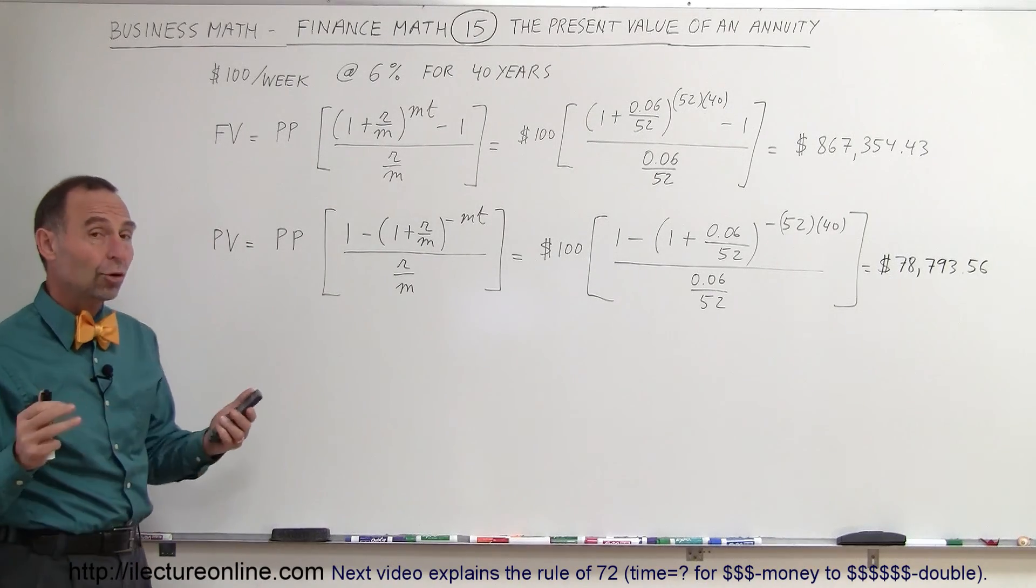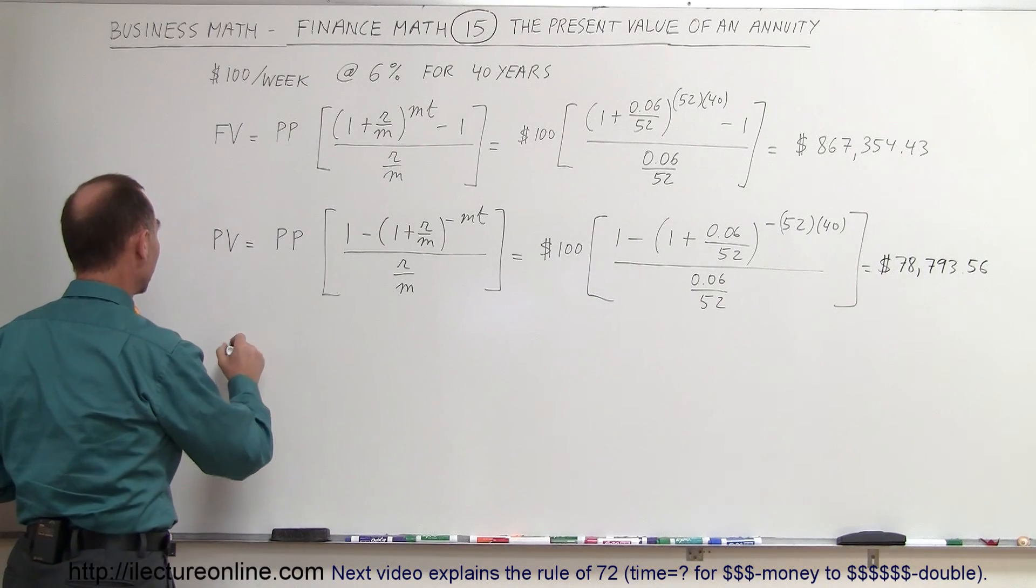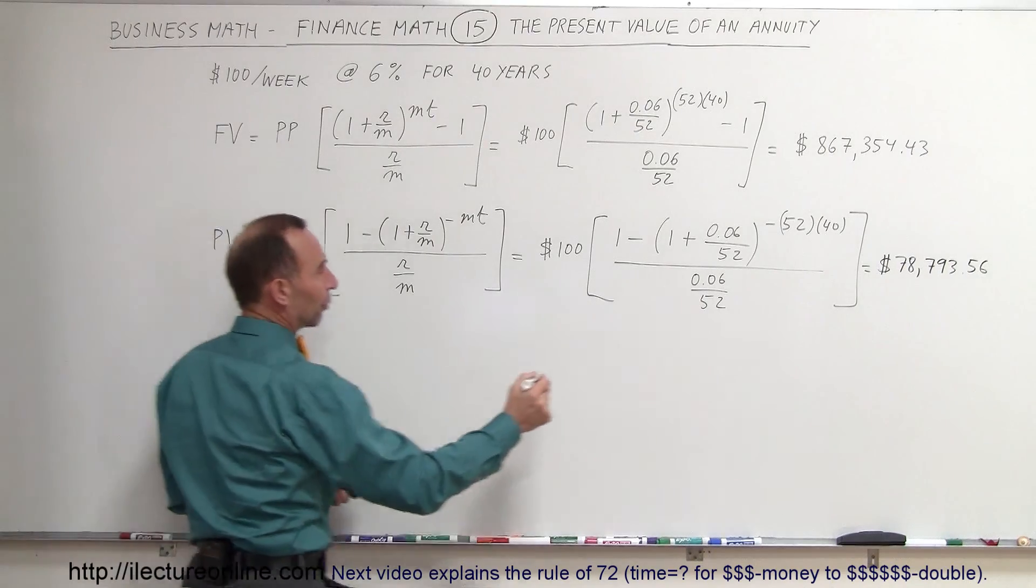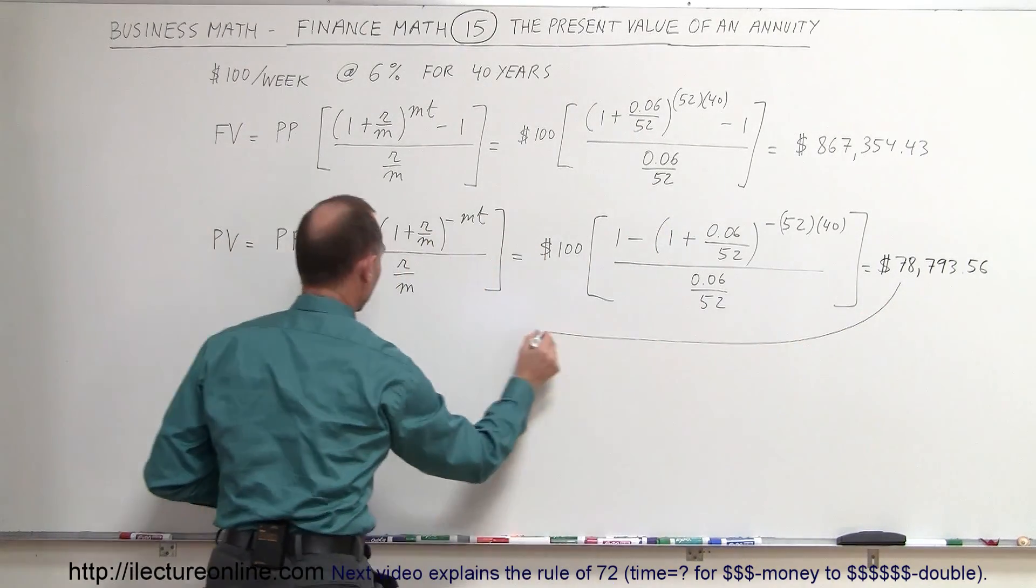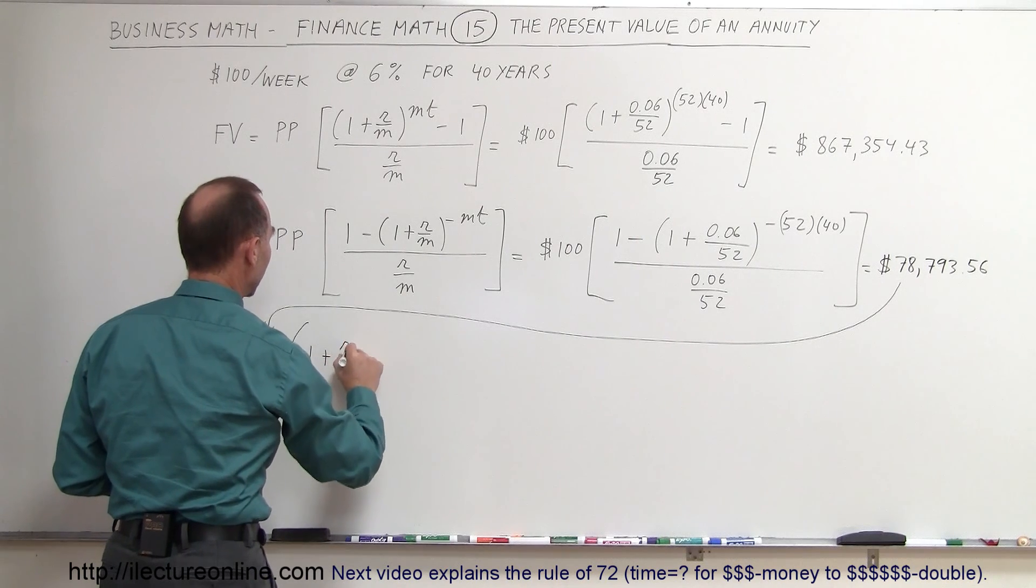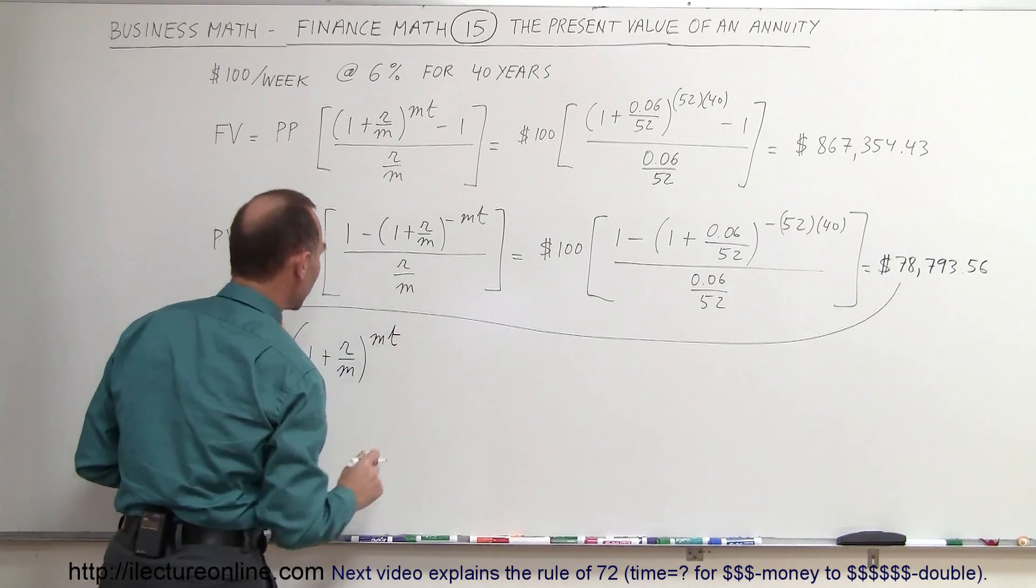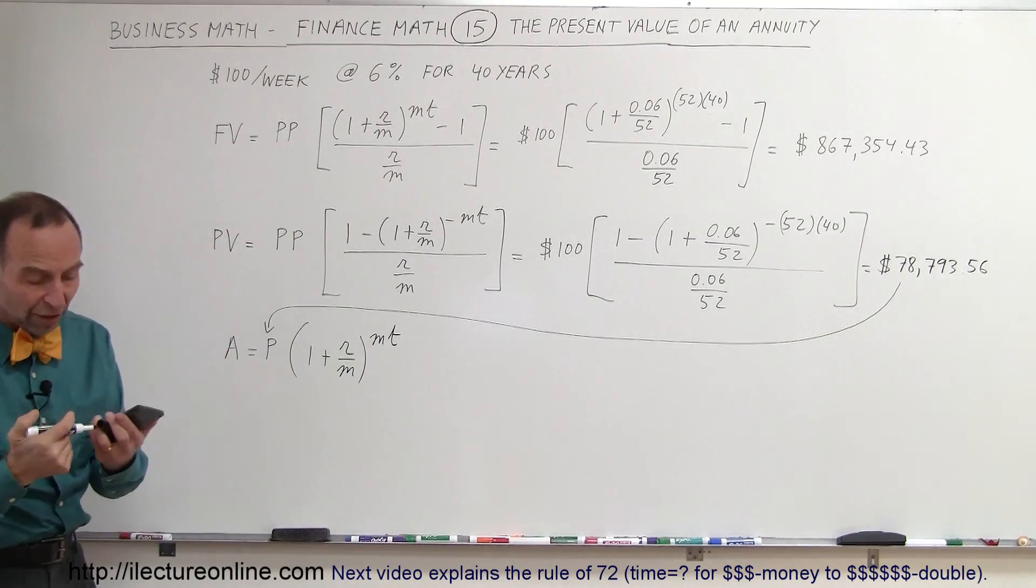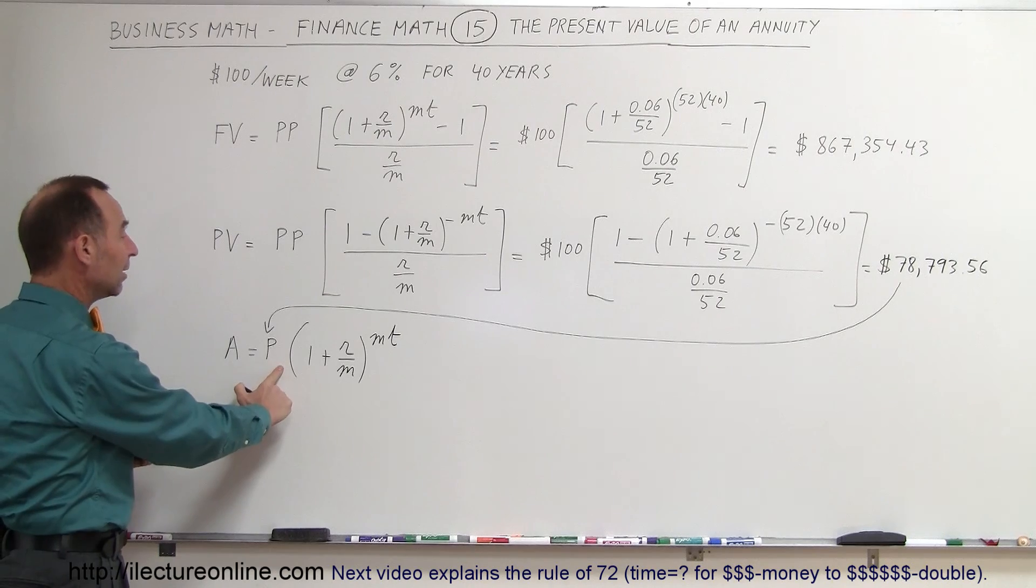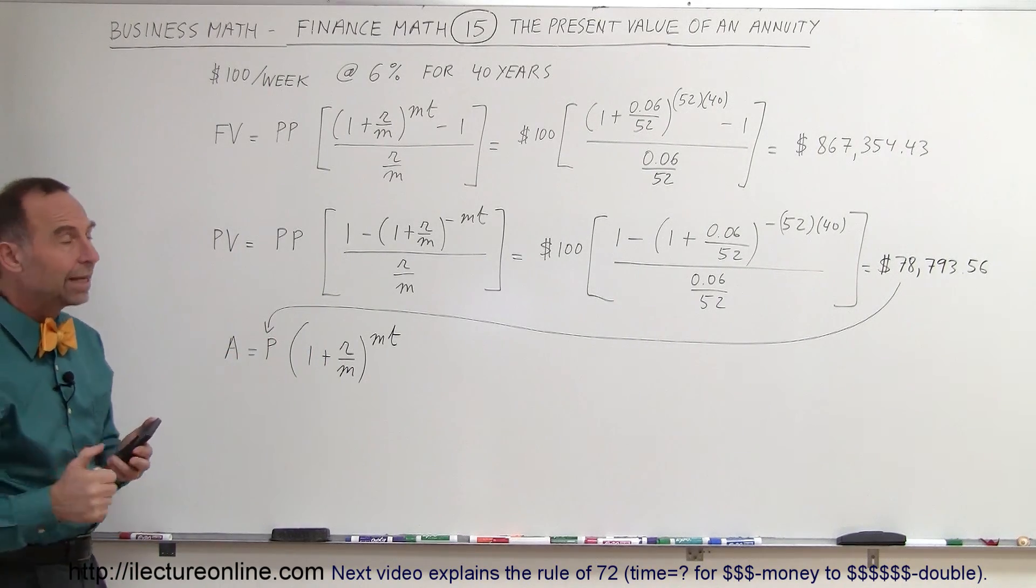Just to show you that that's indeed correct, let's figure it out. So let's say that we have the amount accumulated is equal to the principal, and of course the principal invested would be the same amount of money right here, times the quantity 1 plus the rate over the number of conversions per month, times m times t. That again is the equation that we use for compounded interest, and we're going to invest the same amount of money for 40 years at 6% interest rate with weekly conversions.